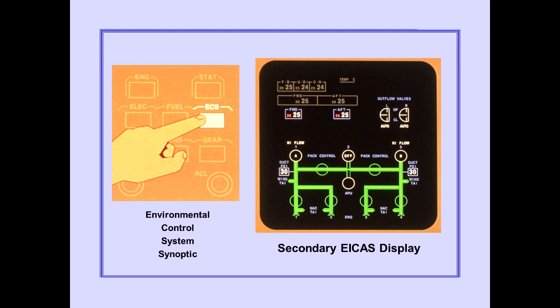Pushing the ECS synoptic switch on the ICAST display select panel displays the environmental control system's synoptic on the secondary ICAST display. The display provides real-time information about the various compartment temperatures and the status of valves, packs, and bleed sources.